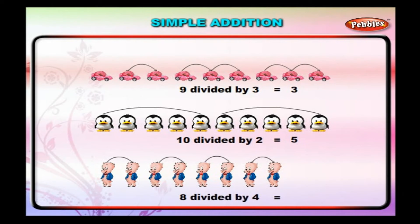8 divided by 4 is equal to 2. Here, the answer is called the quotient.